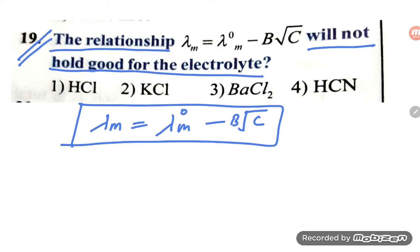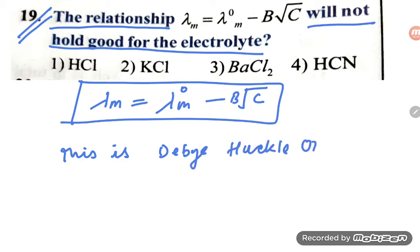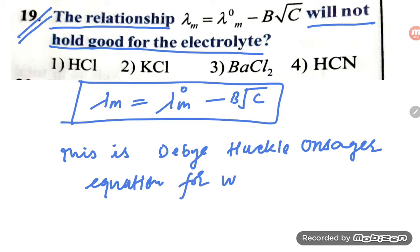This equation is known as the Debye-Hückel-Onsager equation. This Debye-Hückel-Onsager equation is given for weak electrolytes. So, dear students, let us understand this equation.